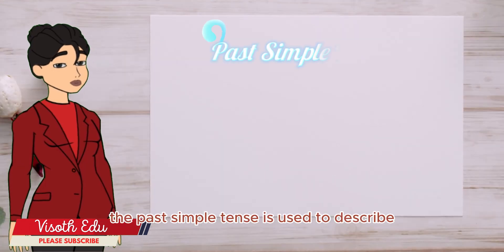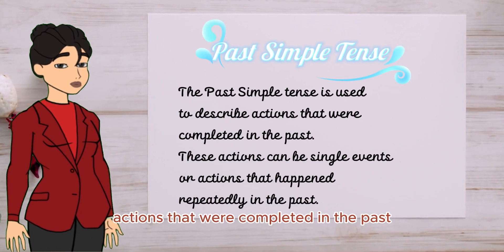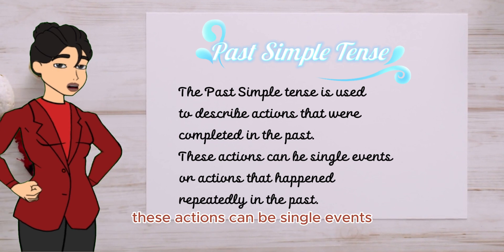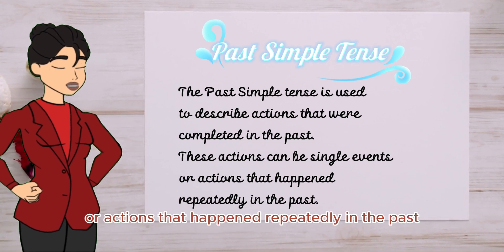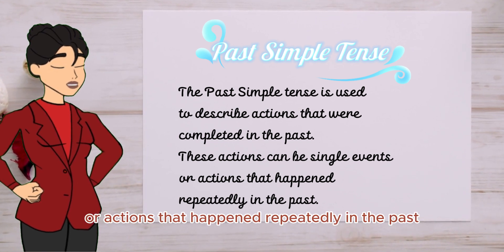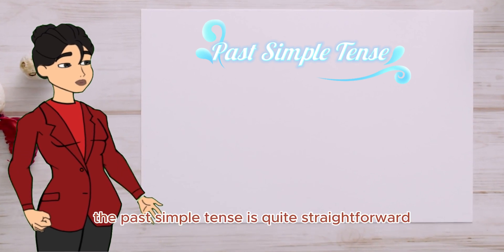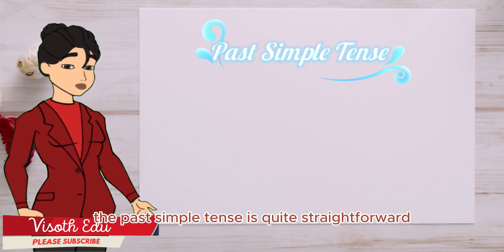The past simple tense is used to describe actions that were completed in the past. These actions can be single events or actions that happened repeatedly in the past. The structure of the past simple tense is quite straightforward.